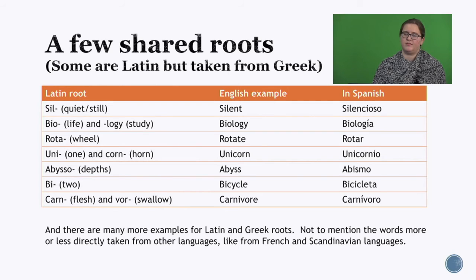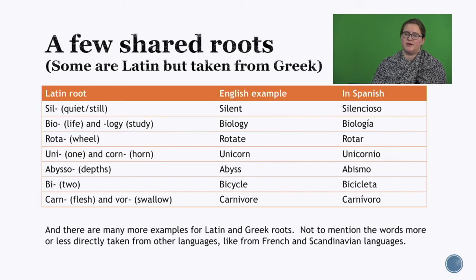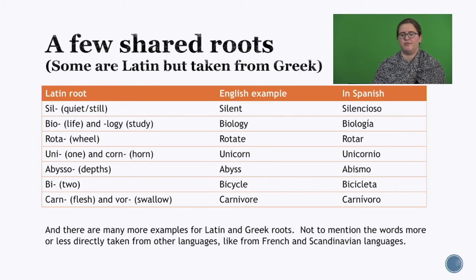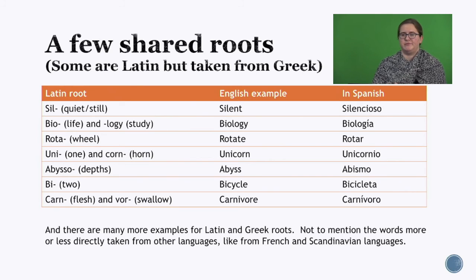'Abisso' means depths — like the English word 'abyss,' which you might be familiar with from the ocean, with really deep cracks at the bottom. In Spanish, 'abismo.' 'Bi' means two — bicycle is the example here, and 'bicicleta' in Spanish. And 'carn' for flesh and 'vor' for swallow — like chili con carne, a food with extra meat. So 'carnivore' means swallows flesh, eats meat, and in Spanish 'carnívoro.' There are a ton more examples, and Latin gets mixed up with Greek — language is complicated, but really fun.